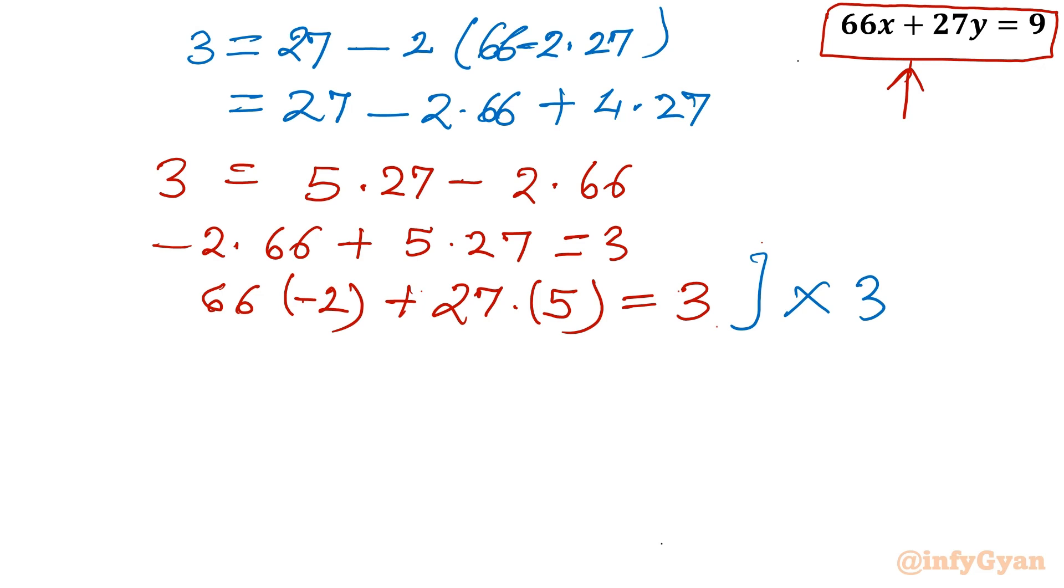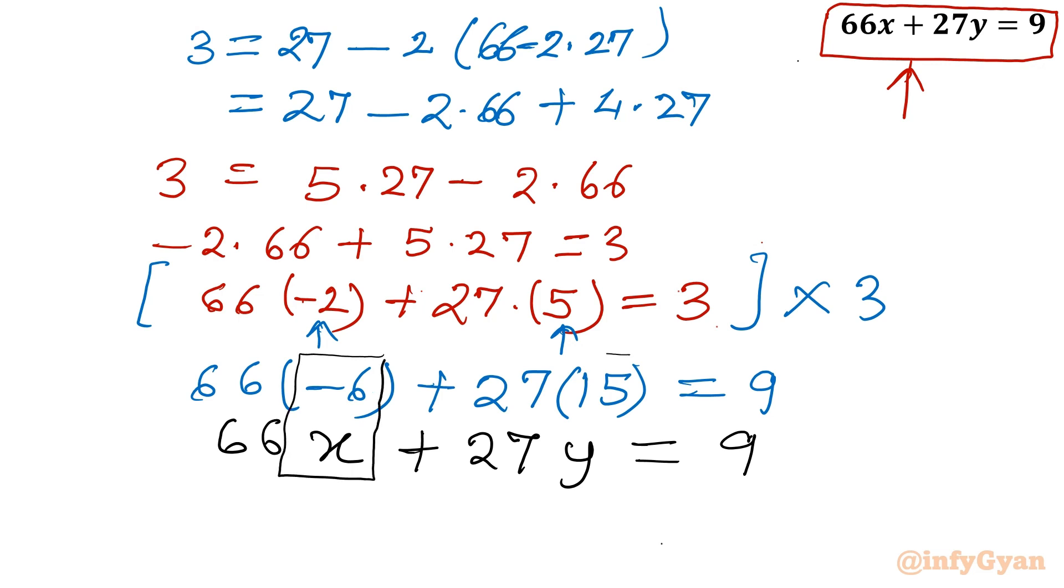I will multiply this equation with 3. Multiply this whole equation with 3. So now this 3 I will multiply in the brackets. So it will become 66 in bracket minus 6 plus 27 in bracket 15 equal to 9. Now simply we can compare with the given equation. That would be our particular solution. So 66x plus 27y equal to 9. So from here we can say x0 equal to negative 6 and y0 equal to 15.